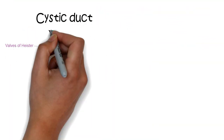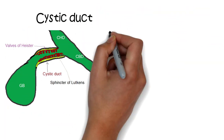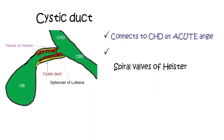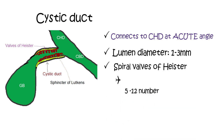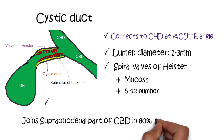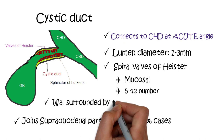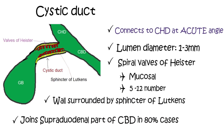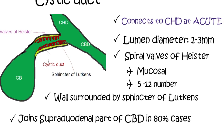The cystic duct connects the gallbladder to the common hepatic duct at an acute angle to form the common bile duct. Its length is variable with an average of 3 cm, and its lumen diameter is 1–3 mm, equal to the lumen size of the appendix. The mucosa is arranged in spiral folds known as the spiral valve of Heister, which are 5–12 in number. The wall of the cystic duct is surrounded by a sphincteric structure called the sphincter of Lutkens. The cystic duct joins the supraduodenal segment of the CBD in 80% of cases, while in 20% it can join lower in the retroduodenal or retropancreatic part, or higher at the right hepatic duct.